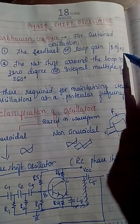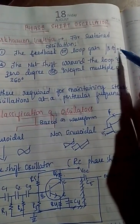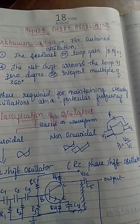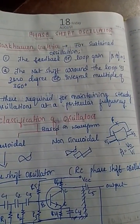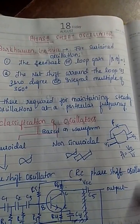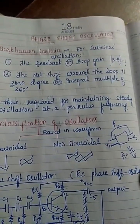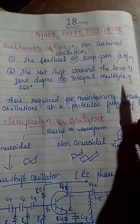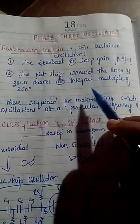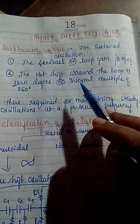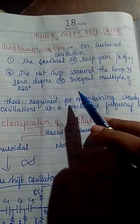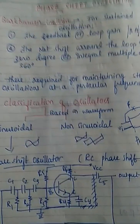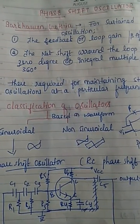We get sustained oscillation when the loop gain is 1. If beta*A is greater than 1, the amplifier starts increasing oscillation, continuously amplifying the signal. When beta*A becomes equal to 1, we get sustained oscillation. The net phase shift around the loop should be zero degrees or an integral multiple of 360 degrees. Because of the 3 RC network and the transistor, the total shift is 360 degrees.